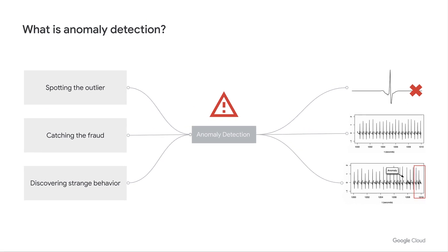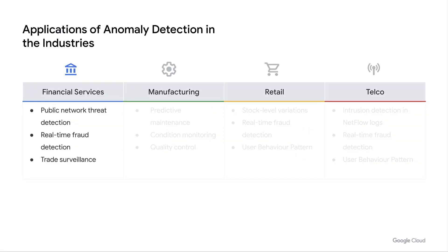Anomalies are not defined by their own characteristics, but in contrast to what is normal. The speed with which businesses are able to identify anomalies impacts their options for response. For example, not detecting a fraudulent financial transaction immediately and instead waiting hours or even days often results in writing off the financial loss. On the other hand, finding the anomalous transaction in seconds allows for the invalidation of the transaction and corrective actions to prevent future fraud.